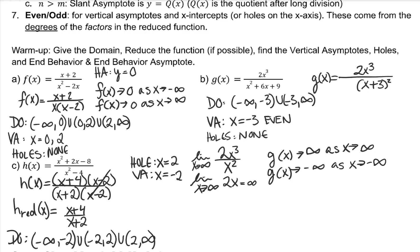For end behavior, it looks like the degree of the numerator is the same as the degree of the denominator, which means our coefficients will be our horizontal asymptote, 1 over 1 is 1. So our horizontal asymptote is at y equals 1, and our end behavior is going to head toward 1 in both directions.